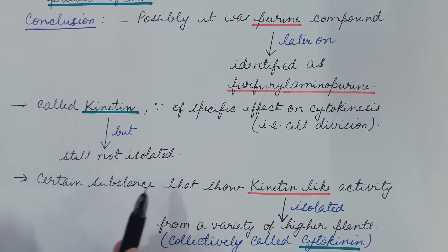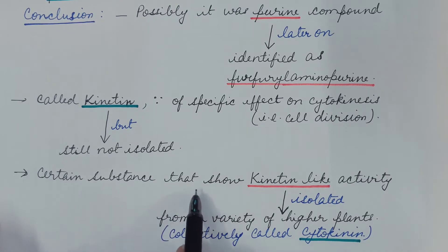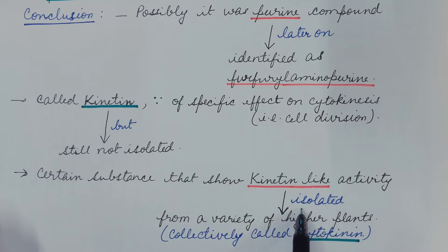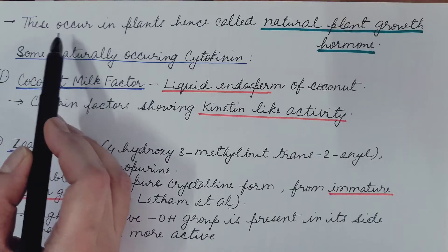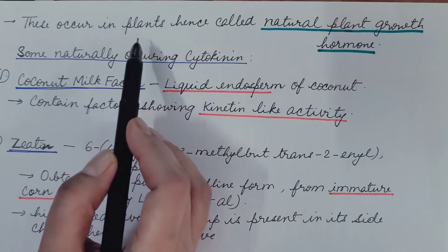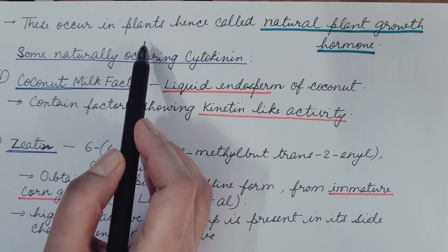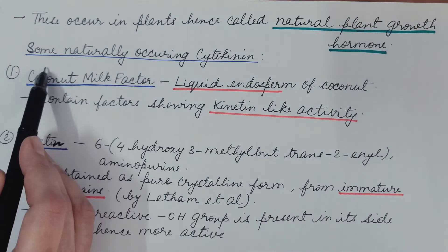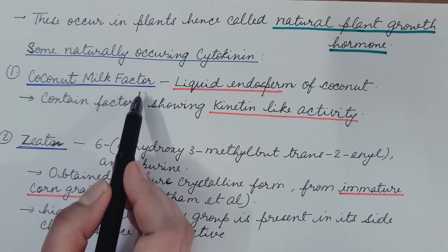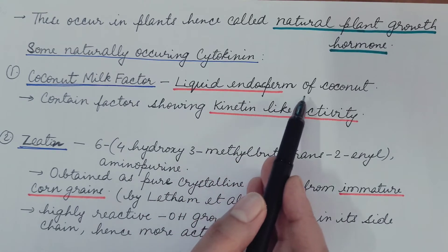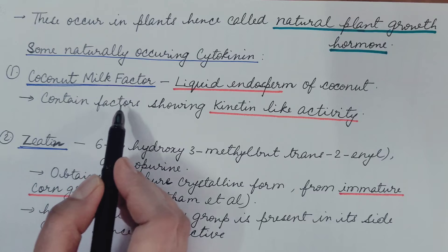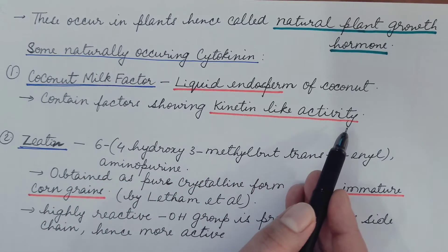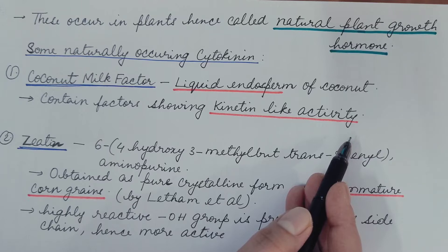Kinetin is still not isolated. Certain substances that show kinetin-like activity were isolated from a variety of higher plants, collectively called cytokinin. These occur naturally in plants and regulate growth; hence, they are called natural plant growth hormones. Some naturally occurring cytokinins are the coconut milk factor, also known as liquid endosperm of coconut, which contains factors that show kinetin-like activity and hence are used in plant tissue culture in vitro.